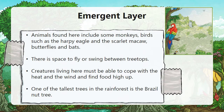Animals found in the emergent layer include some monkeys, birds such as the harpy eagle and the scarlet macaw, butterflies and bats. There is space to fly or swing between the trees, but creatures living here must be able to cope with the heat and the wind and find food high up. Some of the tallest trees in the rainforest include the Brazil nut tree.